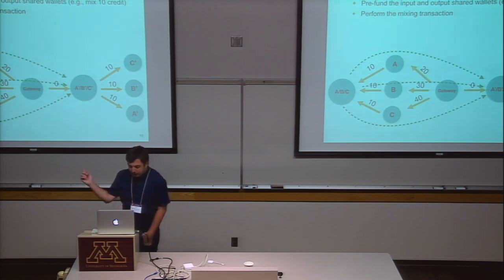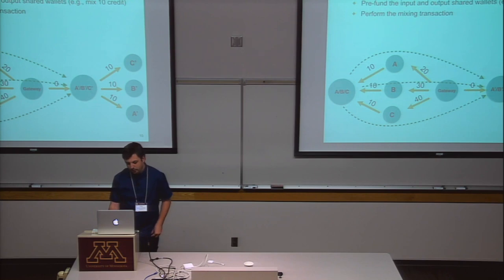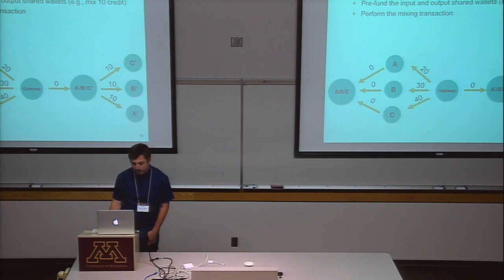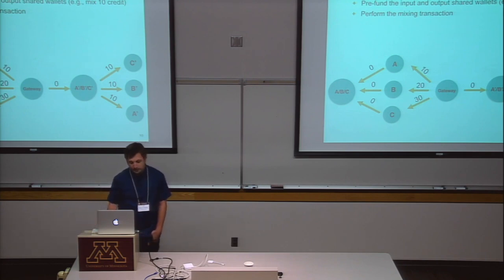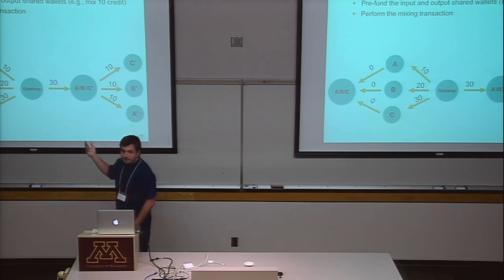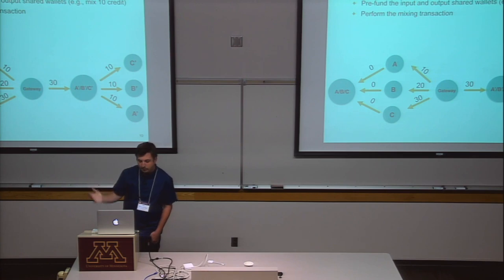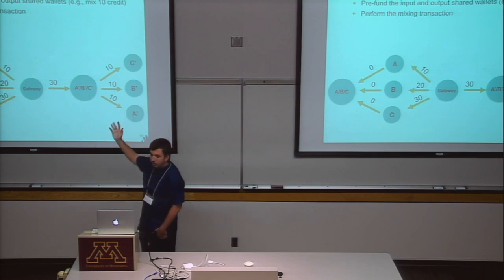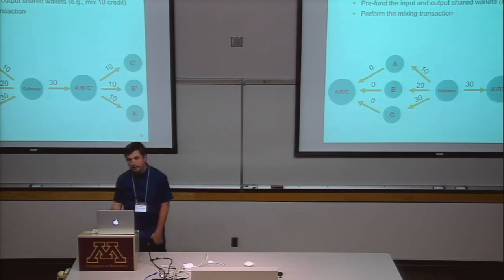Imagine that each of the paths contributes 10 credits. The transaction will first consume the 10 credits pre-funded in the input wallet. Then each of the input wallets contributes 10 credits to the mixing. Finally, the output shared wallet is funded with the 30 credits needed for our example. At this moment, each of the output wallets can actually perform payments to the gateway or to any other wallet connected through the gateway in the credit network.